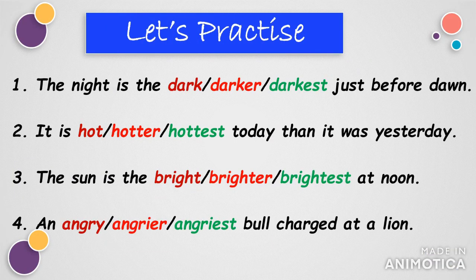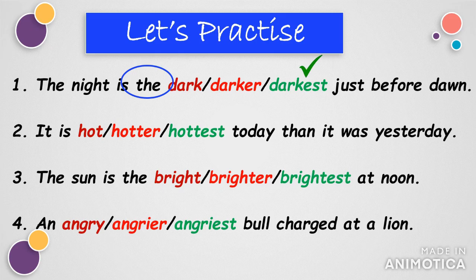Let's try to practice now. 'The night is the ___ (dark/darker/darkest) just before dawn.' In this sentence you find the article 'the', so we should use the superlative form — the answer is 'darkest'. 'It is ___ (hot/hotter/hottest) today than it was yesterday.' Here we see the word 'than' and hence we should use the comparative degree — the answer is 'hotter'.